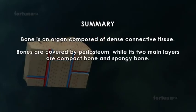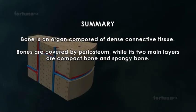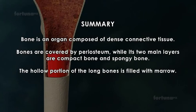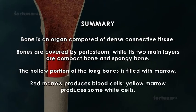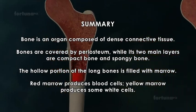Bones are covered by the periosteum, while its two main layers are compact bone and spongy bone. The hollow portion of long bones is filled with marrow. Red marrow produces blood cells, while yellow marrow produces some white cells.